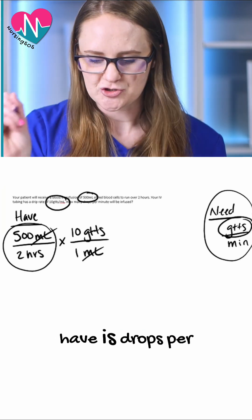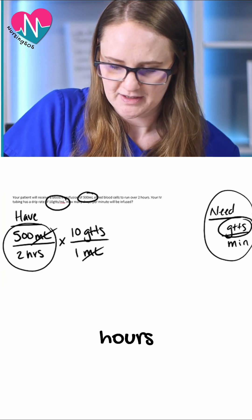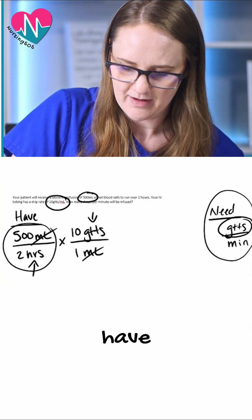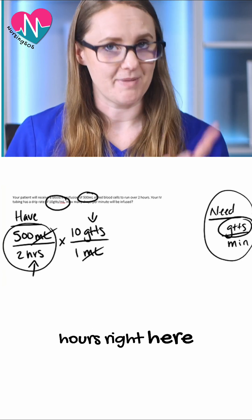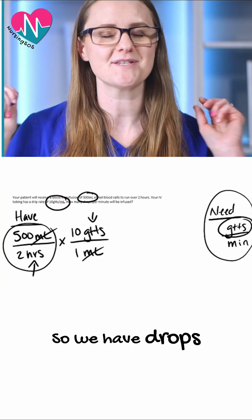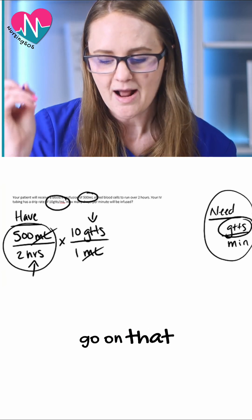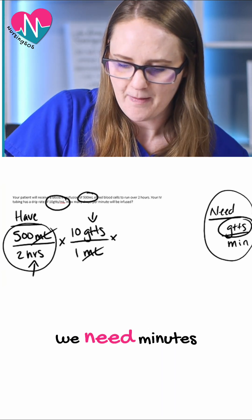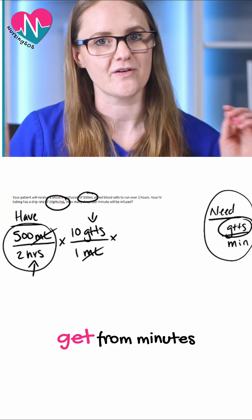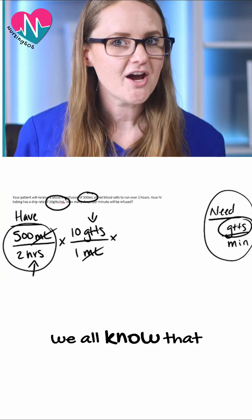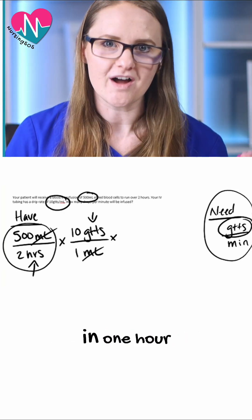Now what we have is drops per hours. We currently have drops right here and we have hours right here, but that's not what we need. We need drops per minute. So we have drops solid, we're good to go on that, but the problem still remains we need minutes. How do we get from hours to minutes? Well, we all know that there are 60 minutes in one hour.